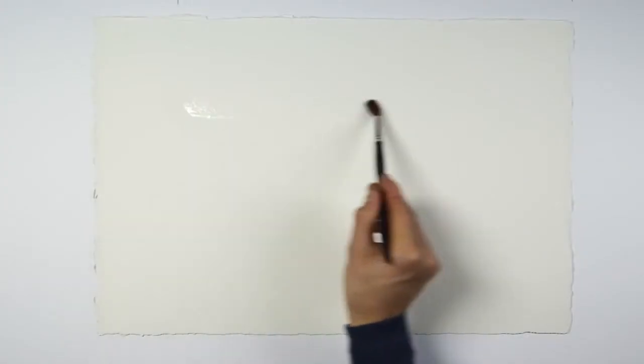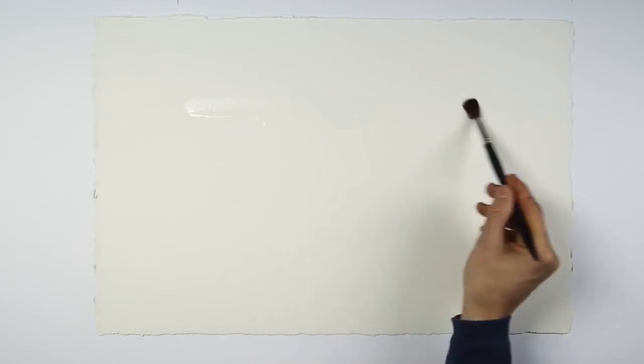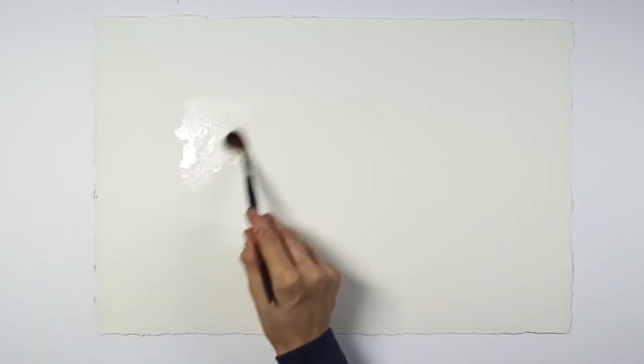I'm now wetting some of the paper here with water. You'll see why in a moment. It may not be obvious, but my work surface here is tilted at about 30 degrees.